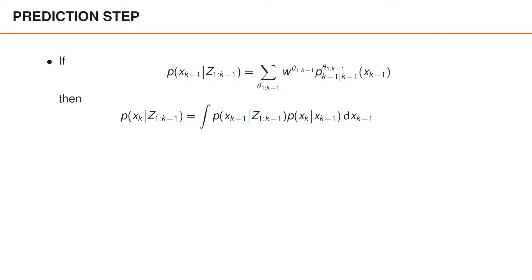Let us start with the prediction step and assume that the posterior at time k-1 is written as this mixture of densities. As always, we can use the Chapman-Kolmogorov equation to perform the prediction step. We can then use the expression for the posterior at time k-1 to write the predicted density as a weighted sum of these integrals.